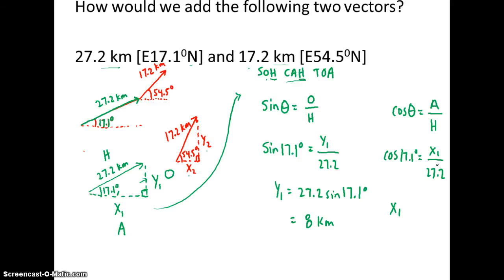So if I want to get x1 all by itself, I multiply both sides of the equation by 27.2. Type that into my calculator, and you get 26. My units are going to be the same as what they were for the hypotenuse.